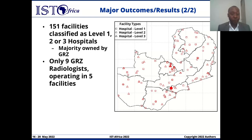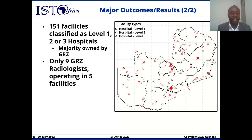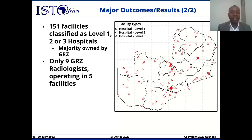It is worth noting that of all these facilities available in the country, as of the year 2020, only 9 qualified radiologists practiced in the public sector in Zambia, operating in only 5 facilities across only 3 provinces out of 10 in the country.